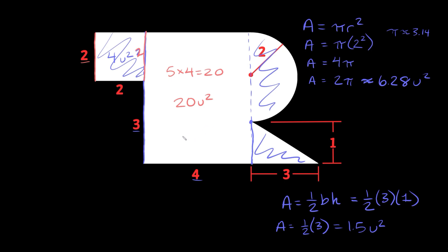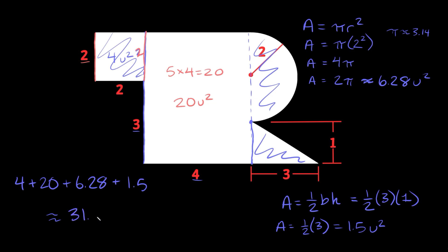Now that we've found the area of all the individual shapes, we just add them all up. The square was 4, the big rectangle was 20, the semicircle was 6.28, and the triangle was 1.5. Adding these all up gives us approximately 31.78 units squared — that's the total area of this whole irregular shape.